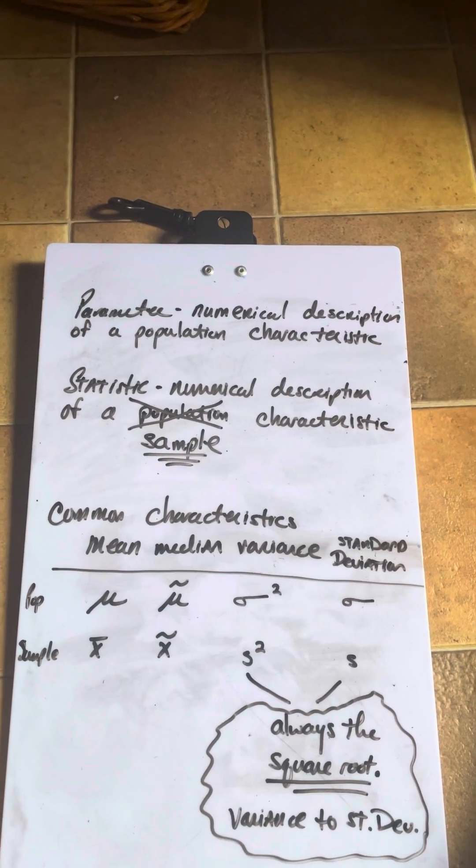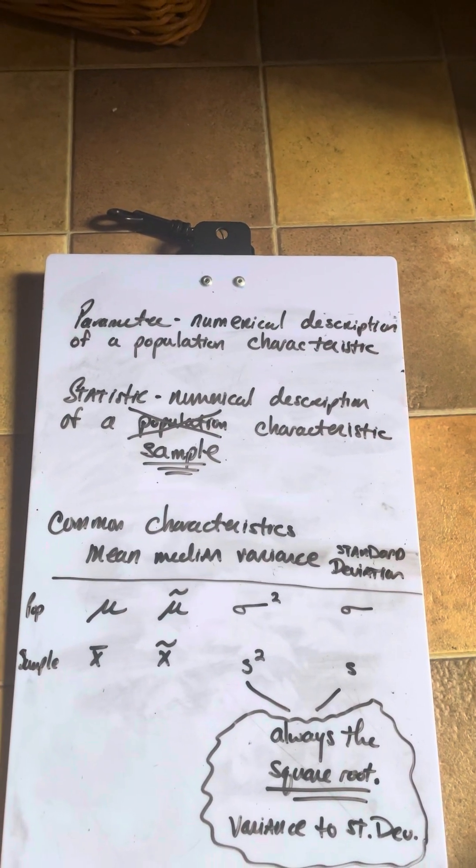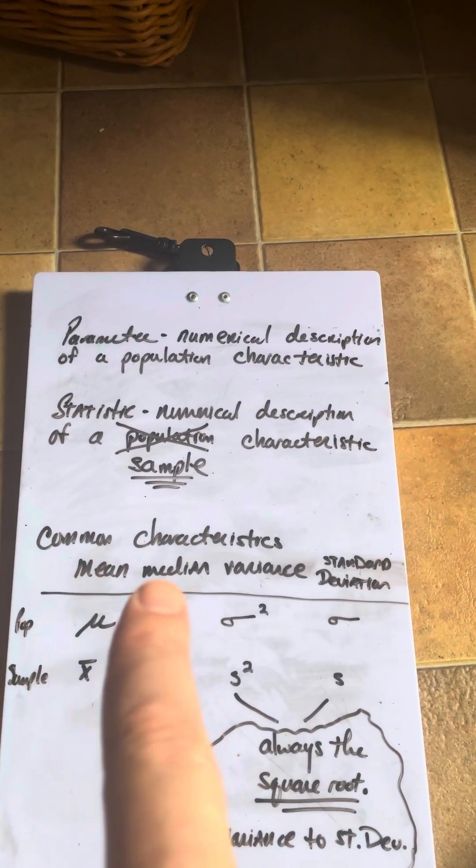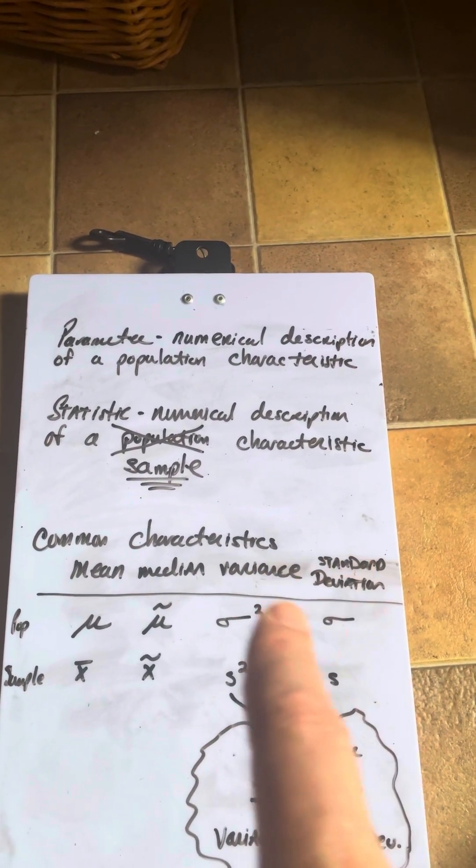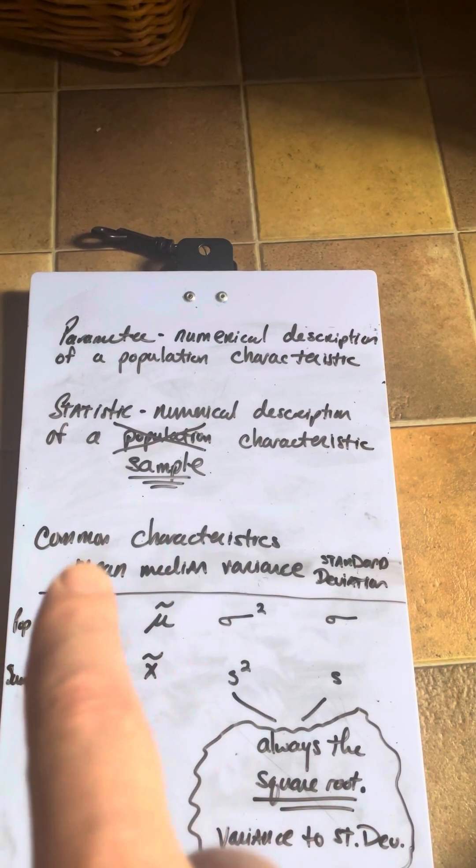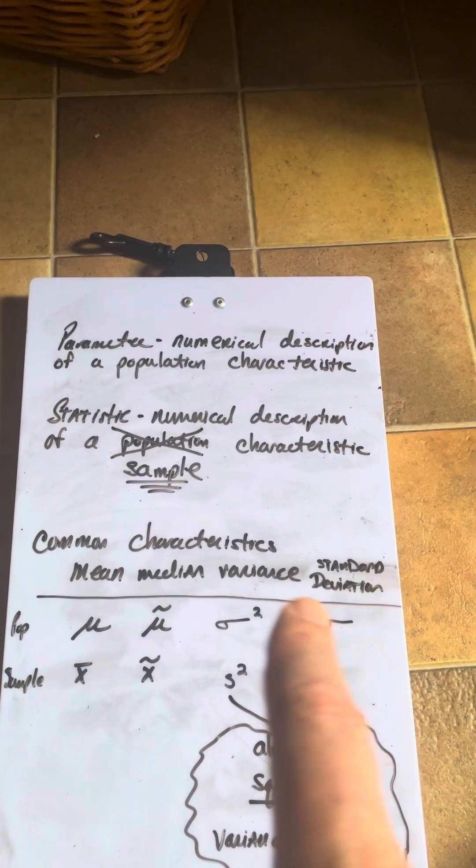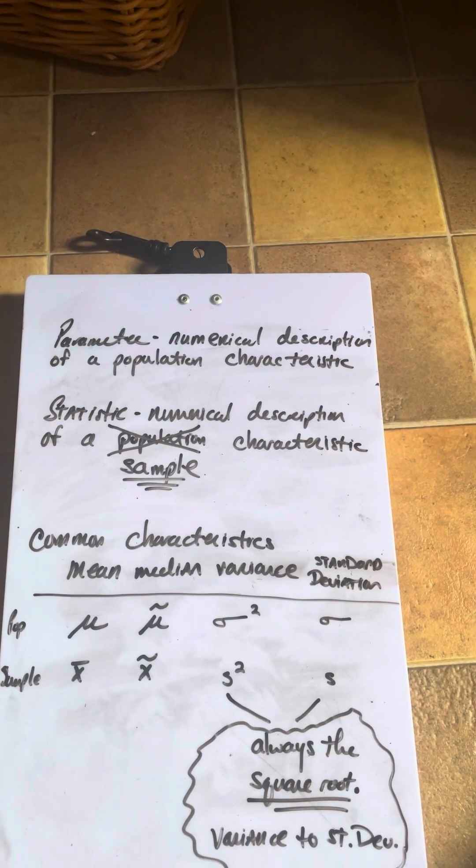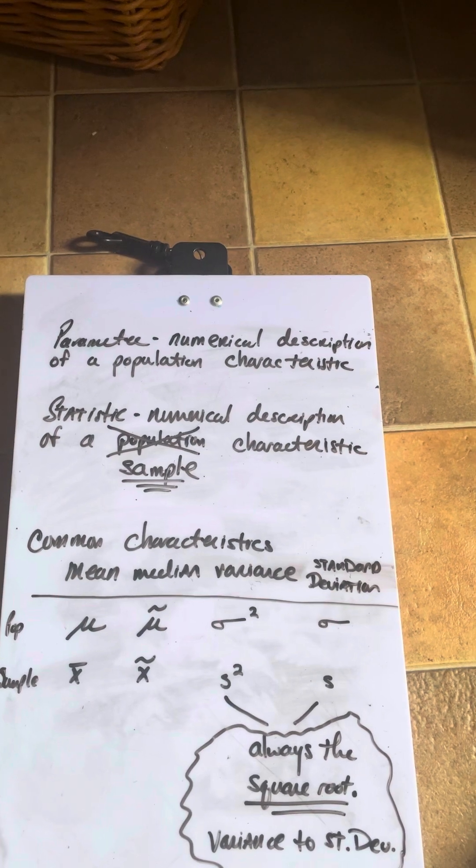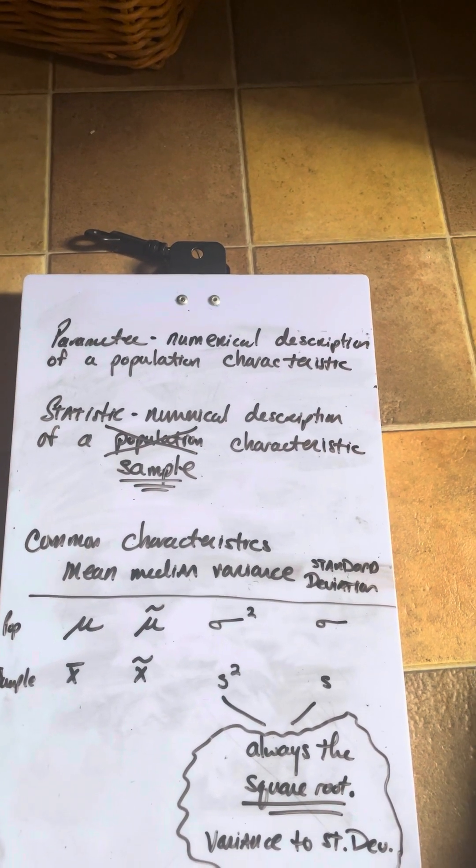And let me explain. Statistics always works on the idea of some measurement of center and then how spread out information is. So these are measurements of the center, the mean and the median. And these are measurements of how spread out the data is.